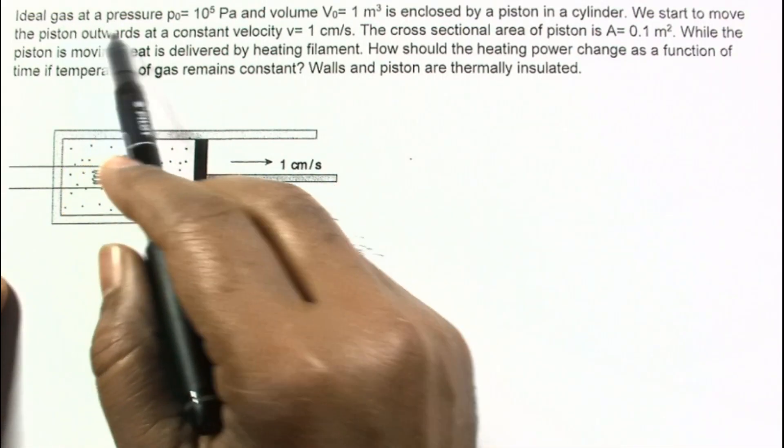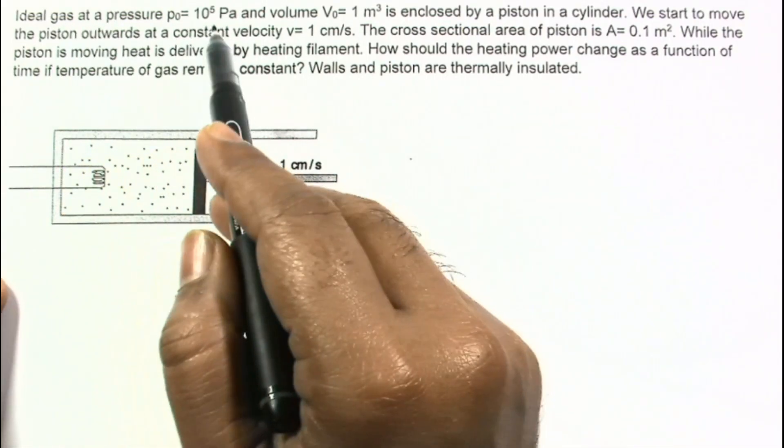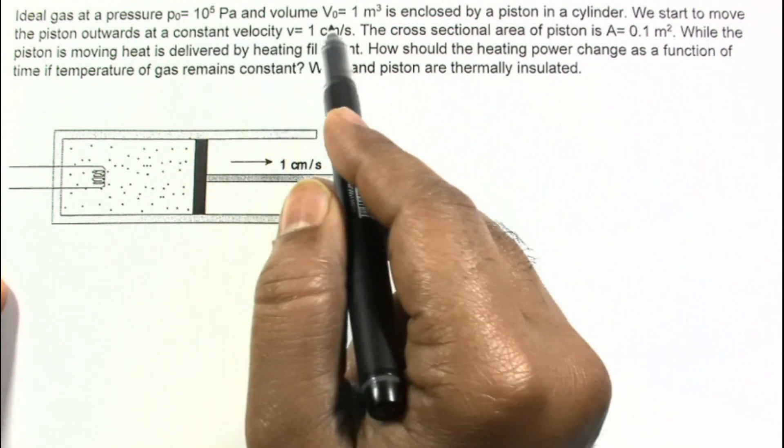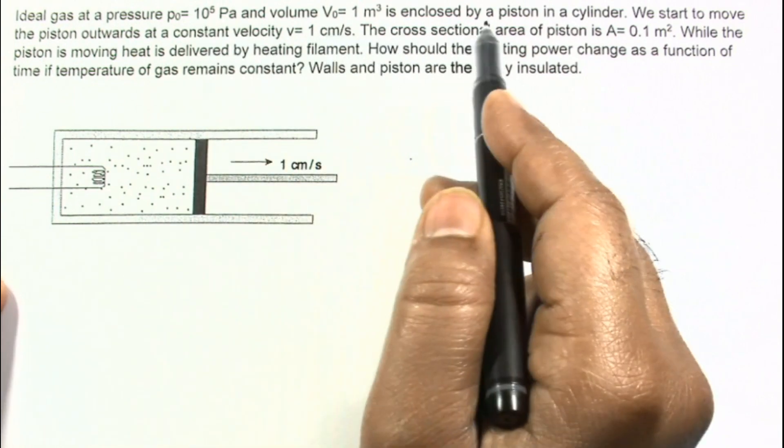In this problem, an ideal gas at a pressure P0 of 10^5 pascal and volume V0 of 1 meter cubed is enclosed by a piston in a cylinder.